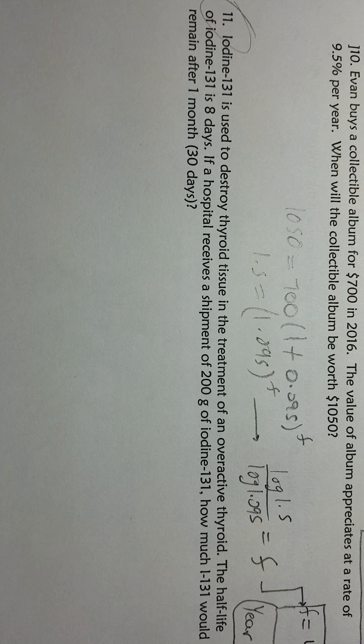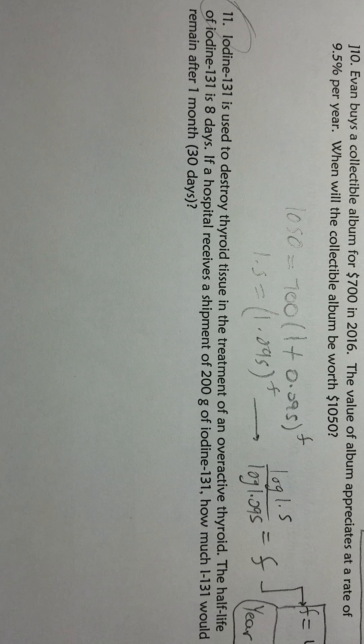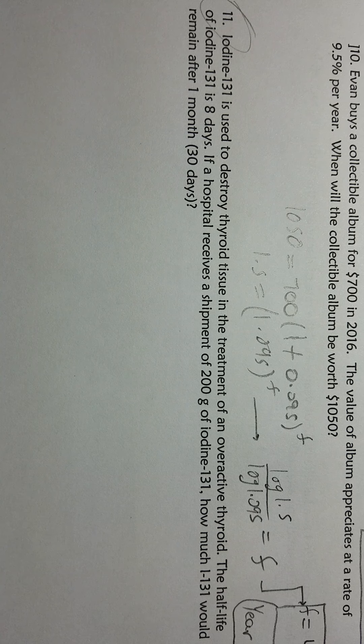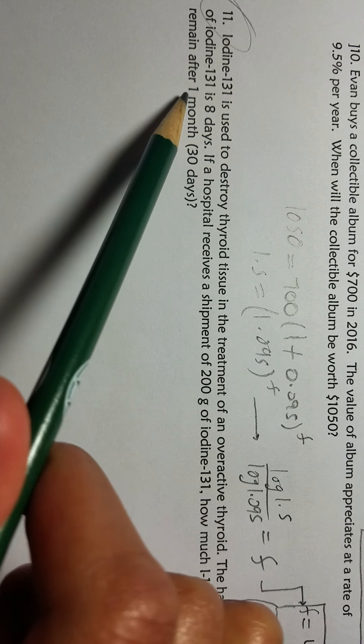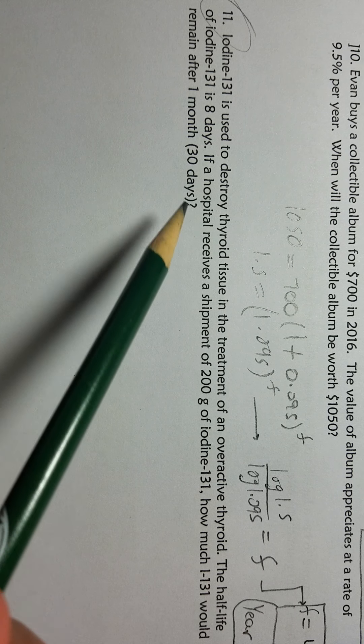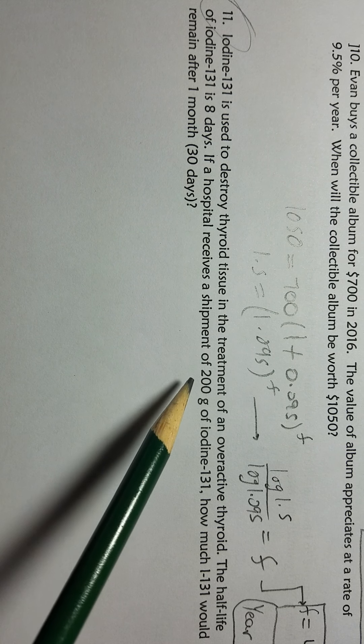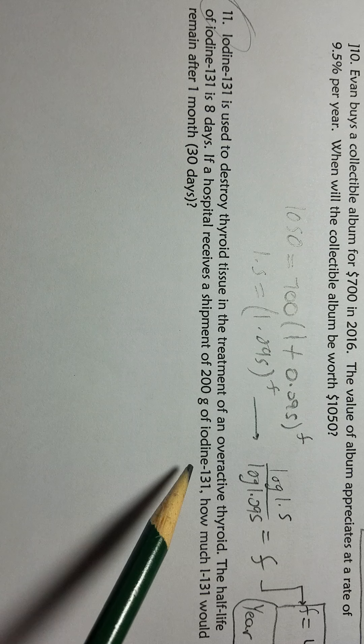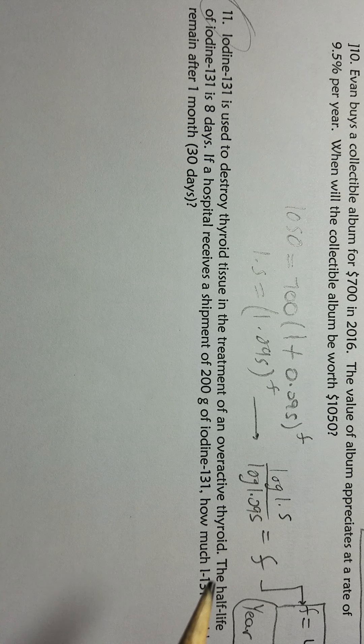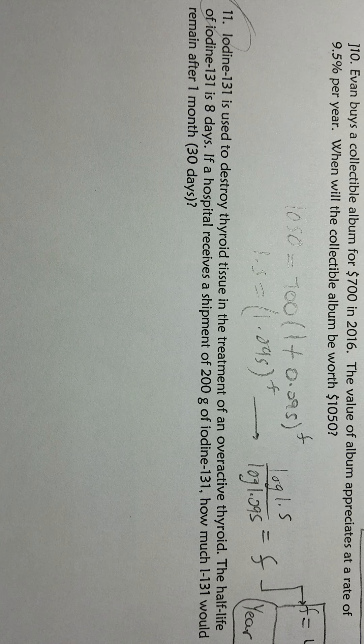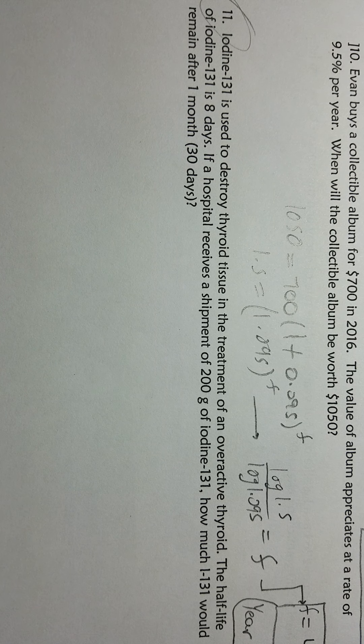We're going to do one more problem. Iodine-131 is used to destroy thyroid tissue in treatment of an overactive thyroid. The half-life of iodine-131 is eight days. If a hospital receives a shipment of 200 grams of iodine-131, how much I-131 would remain after one month, which is 30 days?